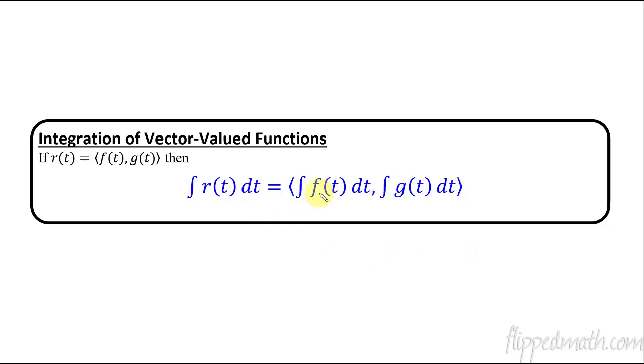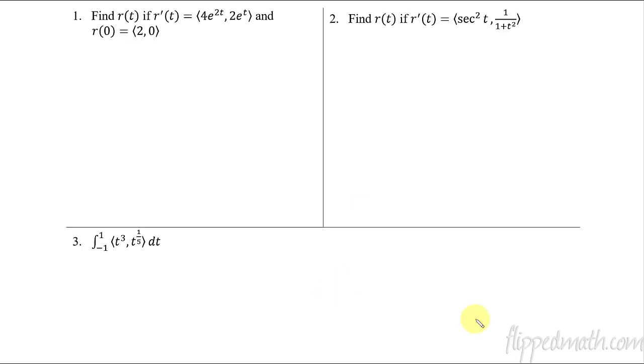Pause the video right now if you don't have this written down yet because I'm going to start jumping into some examples. So first example, we are going to find what is r of t if we have the derivative r prime of t.